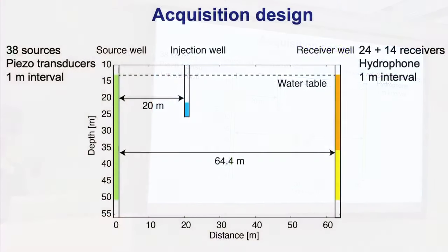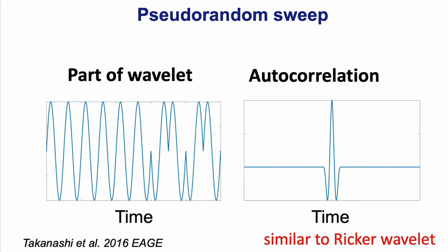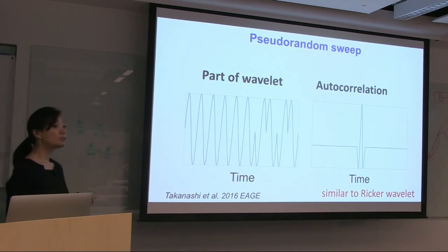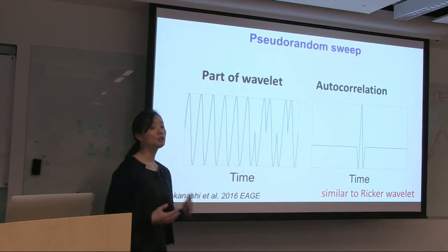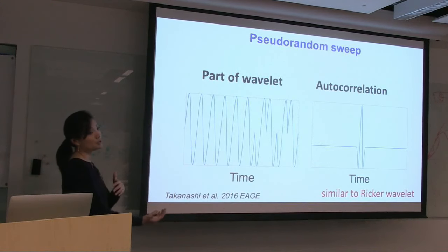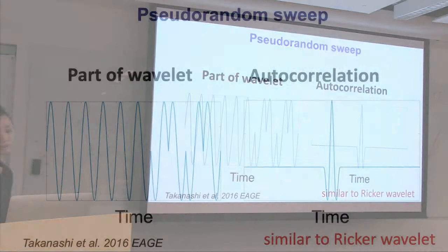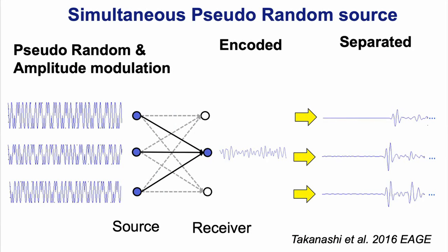Regarding the source: they used a pseudorandom sweep instead of the standard explosive type. The injected waveform looks like a sine curve with different polarity flips — similar to a vibroseis source, but instead of changing frequency, we change polarization. By using autocorrelation, you can recover the source wavelet. Additionally, they used a simultaneous source technique, exciting four sources at different positions at the same time to reduce survey time and enhance stack fold for a good signal-to-noise ratio.